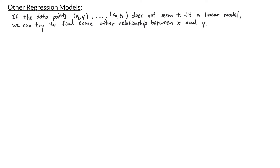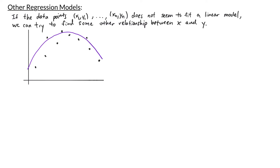Let's consider the following sample of data points. If we look at this data, it seems to go up and then go back down, so a linear model would not be a good fit for this. Instead, there might be a quadratic relation between the x's and y's, so maybe we can try to fit a quadratic to this — a parabola like this might be the best fit.